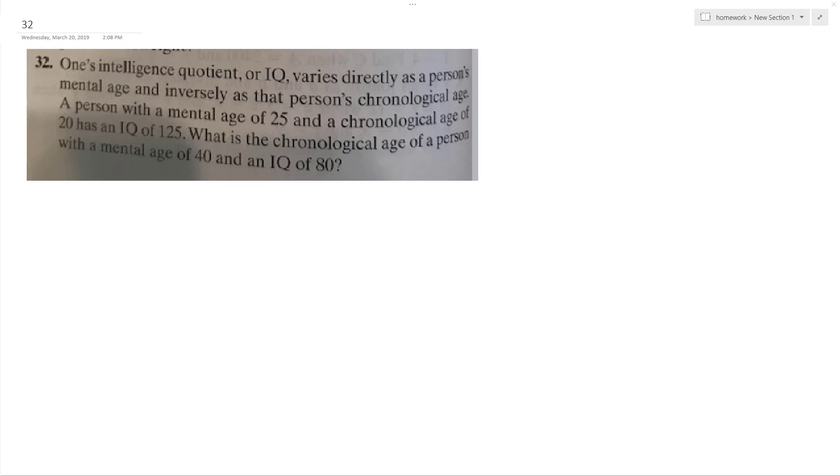And then we've got a regular person and we want to find out their mental age based off of that. Our general equation is going to be IQ equals K times M over C, so mental age over chronological age, and K is our constant.